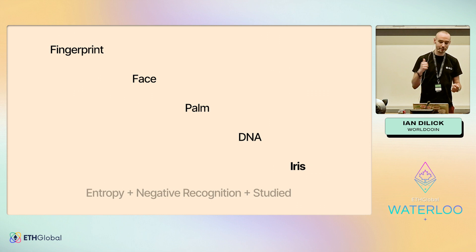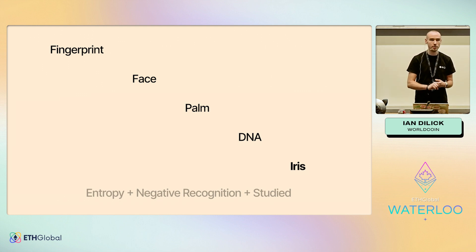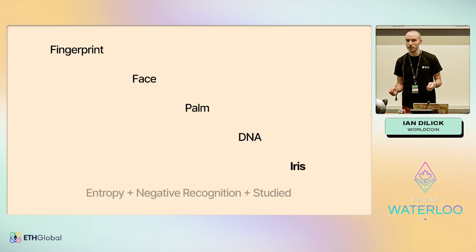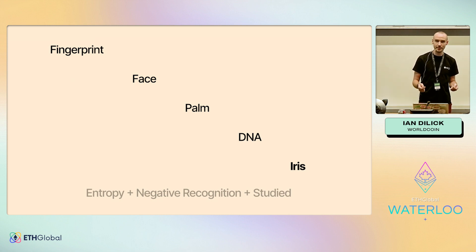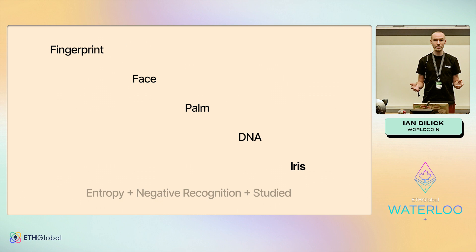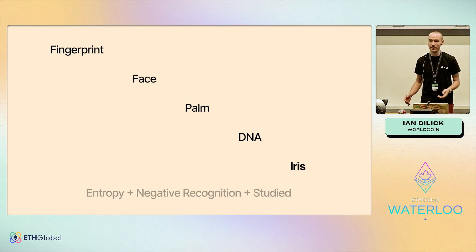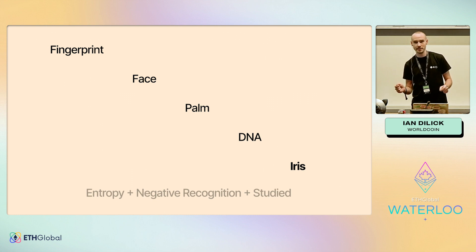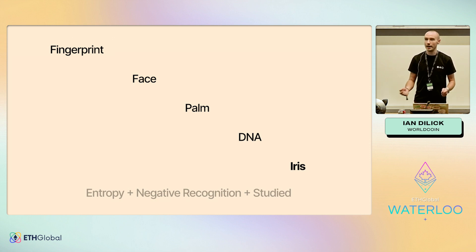We looked at fingerprint, face scans, and palm scans, but they simply don't have enough entropy to distinguish unique humans at the scale of humanity. With Face ID or Touch ID on your phone, Apple can distinguish about one in 30 million people — which sounds like a lot, but at the scale of eight billion it isn't. That's because it's for authentication: checking whether the person in front of the device now is the same as during sign-up. For us, we need to distinguish whether you're unique from everyone else who has ever signed up, so we need one in a billion or higher. One in 30 million just doesn't cut it.